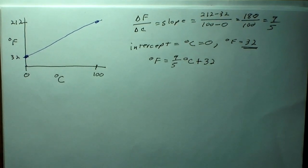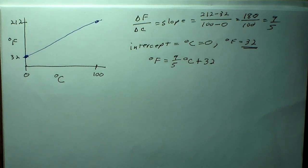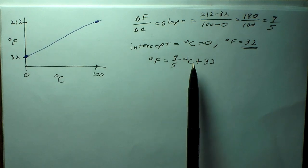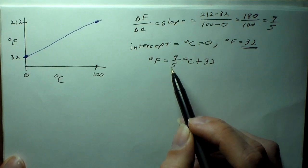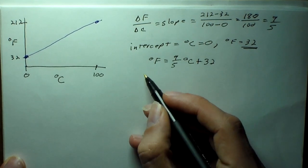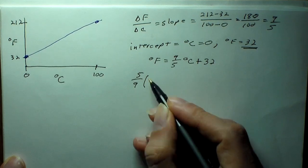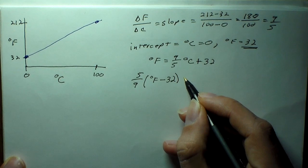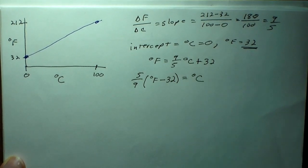I'll give you this equation so don't worry about memorizing it, but obviously be able to use it. We can also rearrange this if we have to solve for Celsius: subtract 32 from both sides and multiply by 5/9. So degrees Celsius equals 5/9 times (degrees Fahrenheit minus 32).